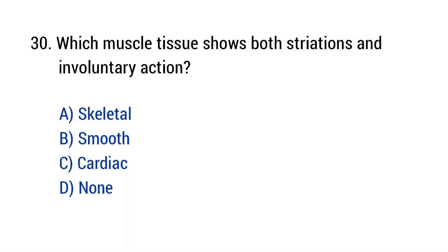Question number 30. Which muscle tissue shows both striation and involuntary action? The right answer is option C: Cardiac.